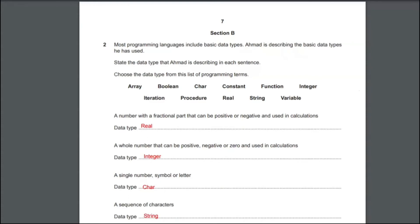The first description is a number with a fractional part that can be positive or negative and used in calculations. Most of you might get confused whether it's going to be real or an integer. An integer data type can only have a whole number that can be positive or negative. But when it comes with a fractional part, like 1.0001 or something like that, it's always going to be a real data type.